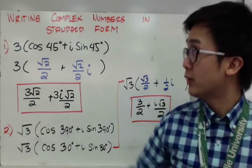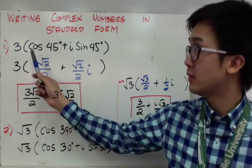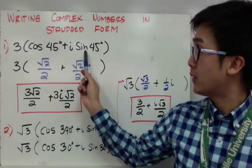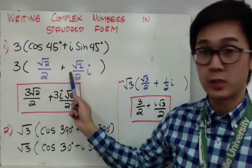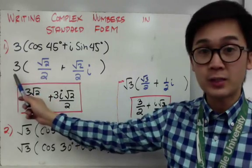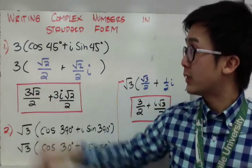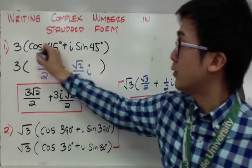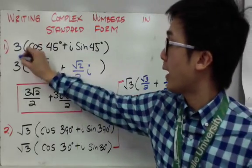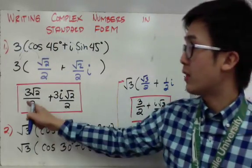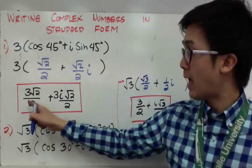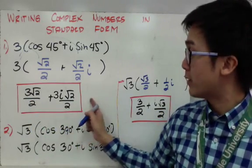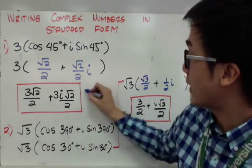Let's say we have 3(cosine 45° + i·sine 45°) and we want to change it to its standard form. We know that cosine 45° is √2/2 and sine 45° is √2/2. Since 3 is outside the parentheses, we distribute 3 to both terms. Therefore, we'll have 3√2/2 + i·3√2/2 as our standard form.